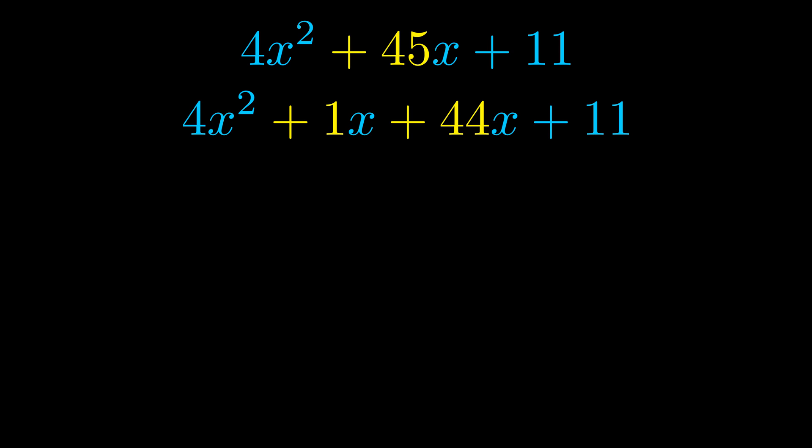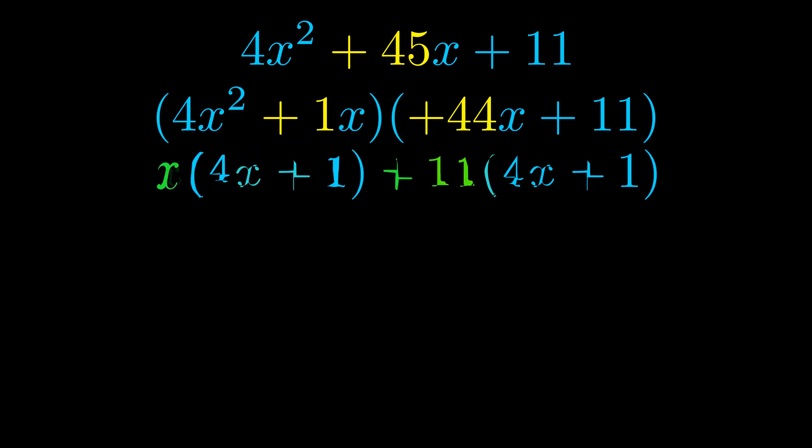Once we've done this, we go ahead and put parentheses around the first term and the last term so that we can take the greatest common factor out of both terms. We can see the greatest common factor is now outside in green.